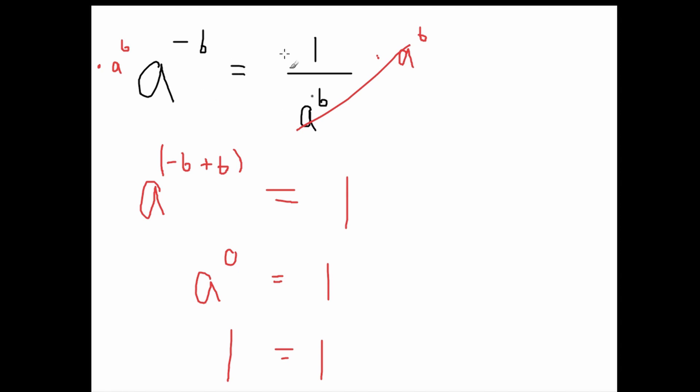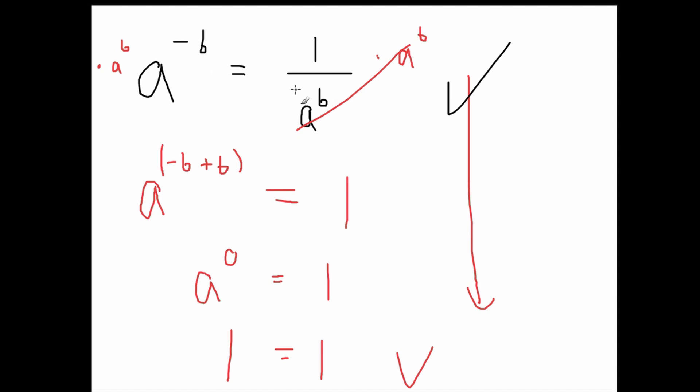Because this starting assumption led us to something that is true, that we know is true, that 1 equals 1, we know that our starting assumption is true. So there you have it. There is a proof that this is correct. We'll see you next time.